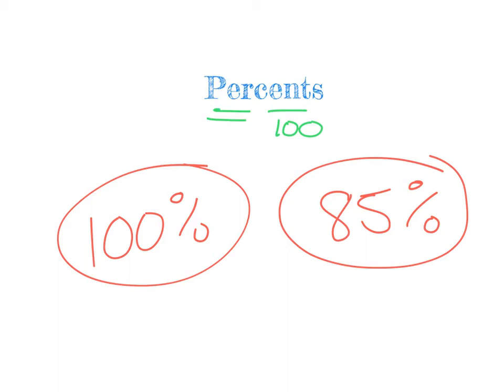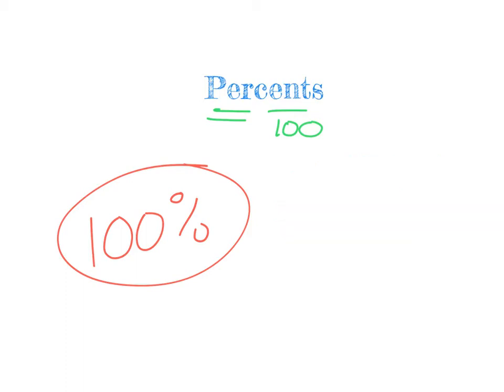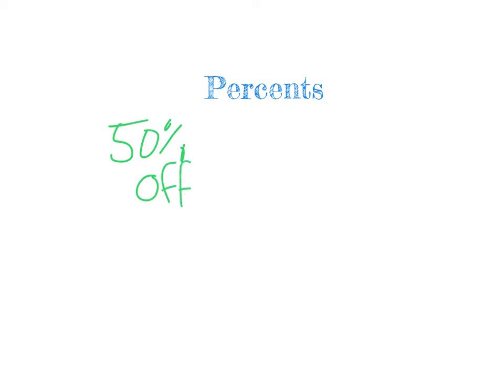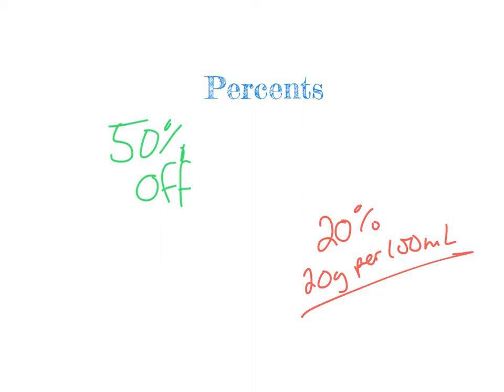Percents aren't always relating to tests and quizzes. You guys probably see percents when you go to the store and something is 50% off or 25% off, or if you have coupons. We also use percents when talking about solutions — later when we start talking about dosages, a 20% solution means that medication has 20 grams per every 100 milliliters of liquid solution. So you're still seeing that magic number: per 100.